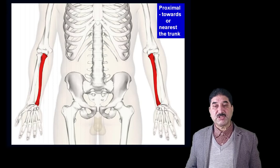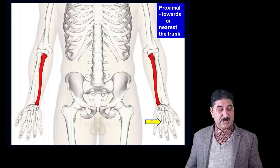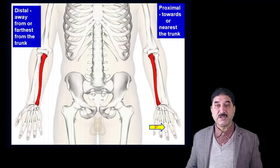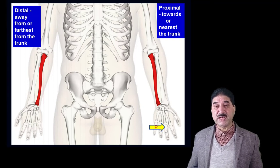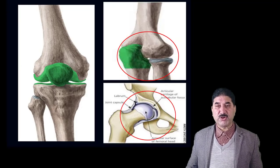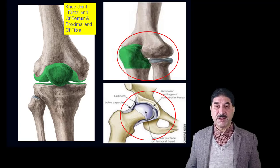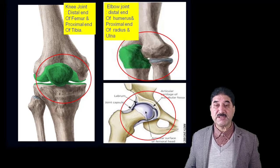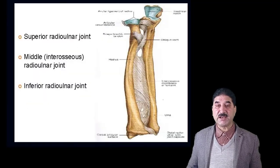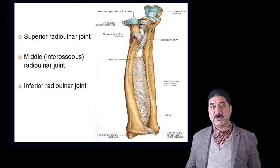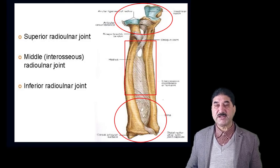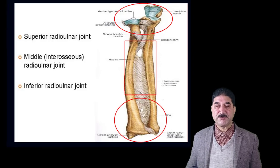Proximal means nearest to the trunk. For example, in the digits there are three phalanges named proximal, middle, and distal. The knee joint is formed by the distal end of the femur and the proximal end of the tibia. The elbow joint is formed by the distal end of the humerus and the proximal ends of the radius and ulna. There are three joints between the radius and ulna: the superior radio-ulnar joint (between proximal ends), the inferior radio-ulnar joint (between distal ends), and the middle radio-ulnar joint formed by the interosseous membrane.